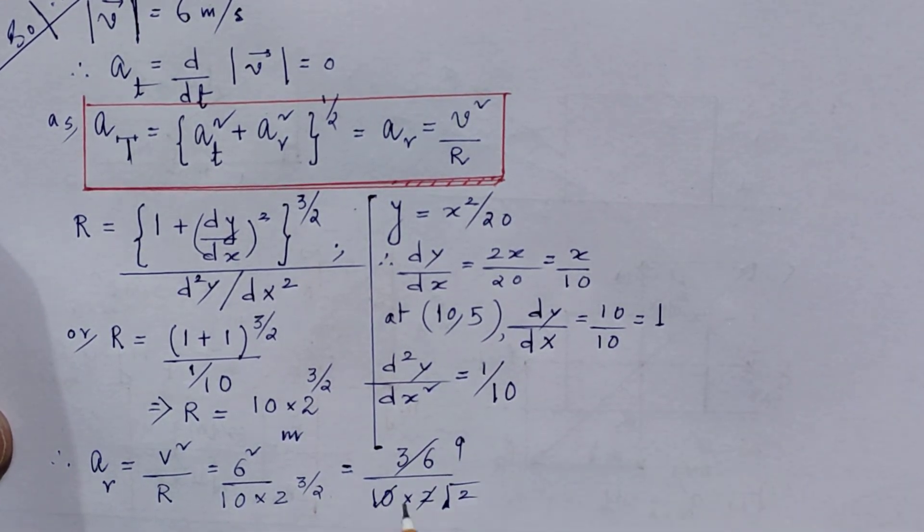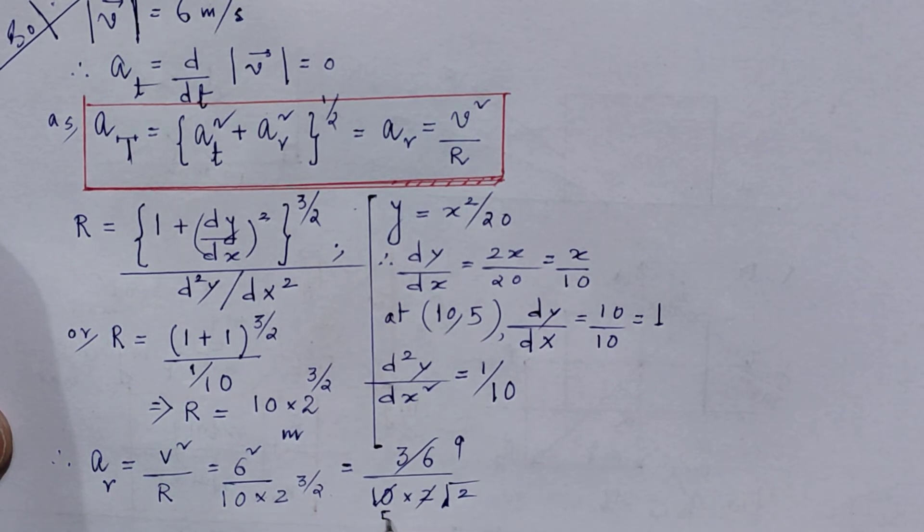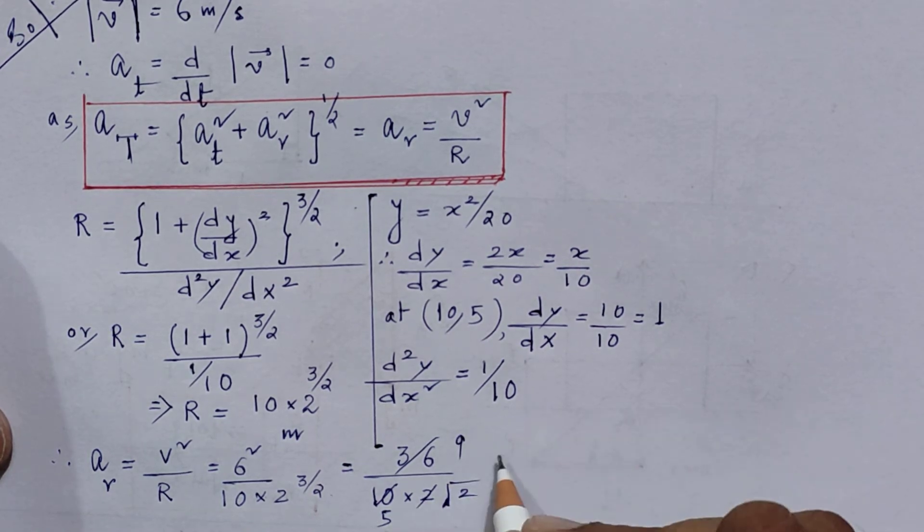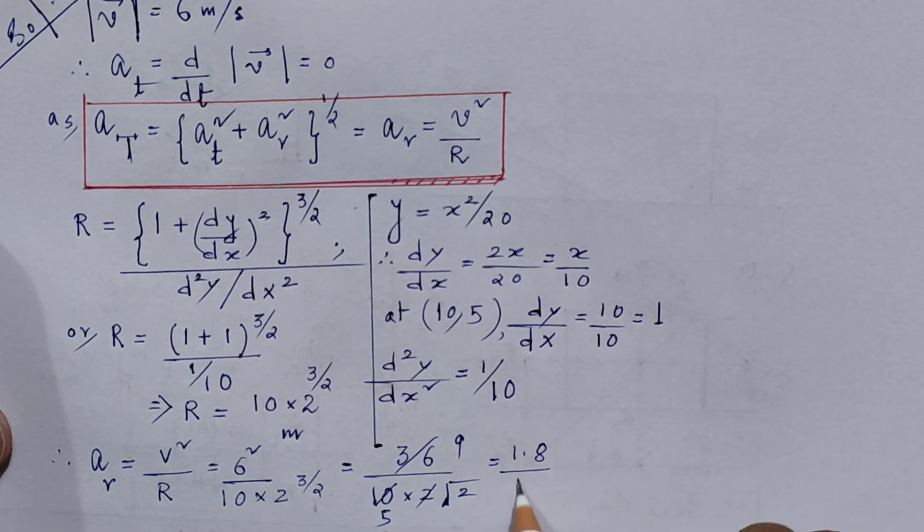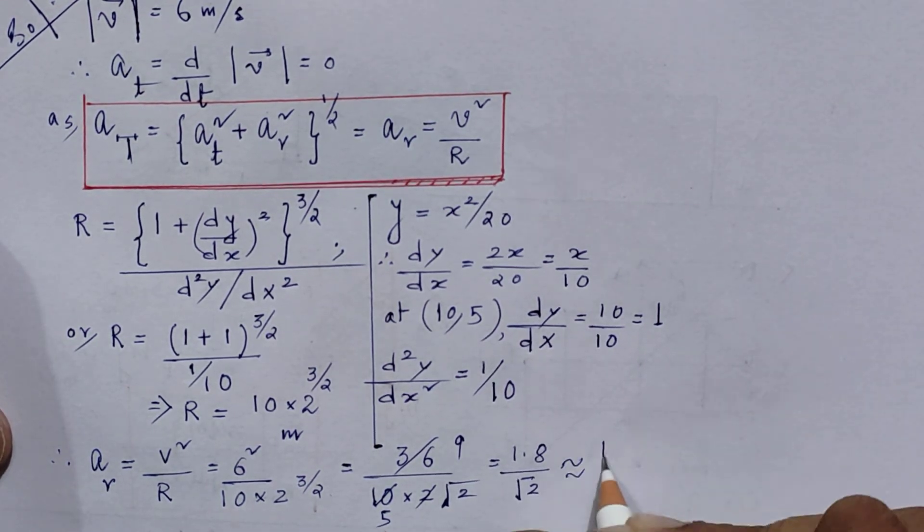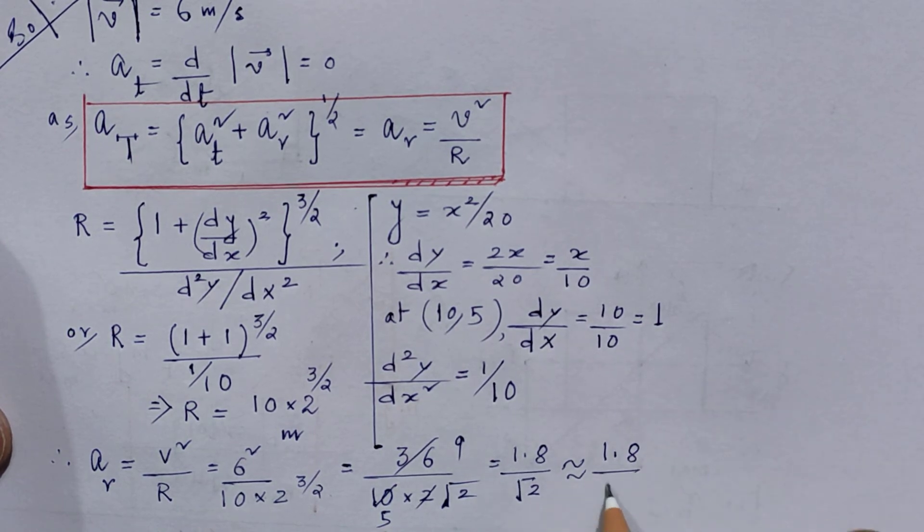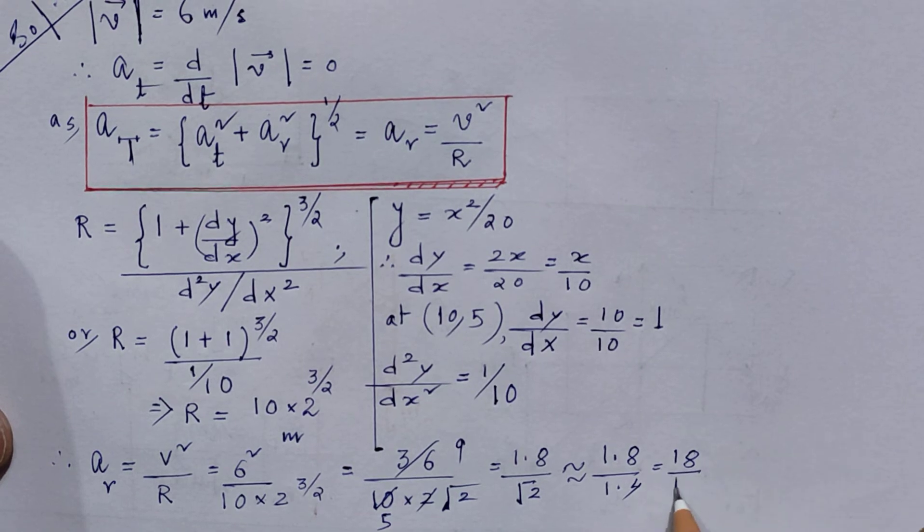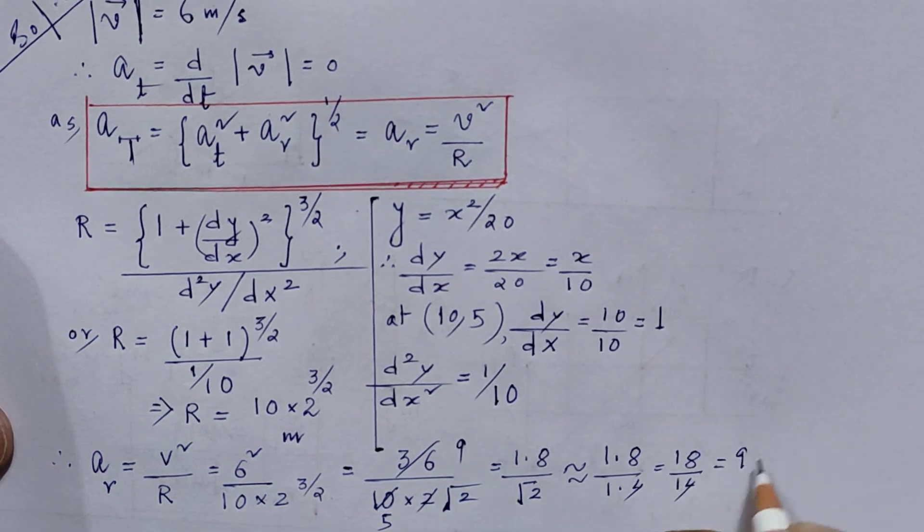I can take away 2 from here also. So basically from here, 20 I am cancelling with 4. So 9 divided by 5 root 2. So it is 1.8 by root 2. So 1.8 by 1.4, so 18 by 14. So 18 by 14 is 9 by 7.